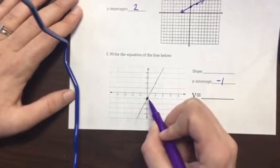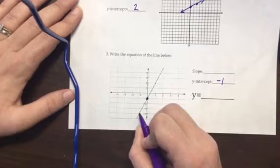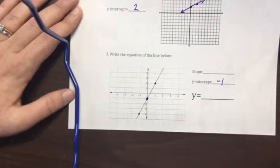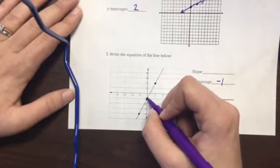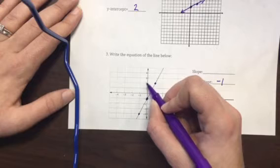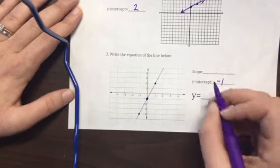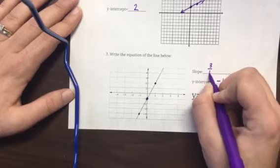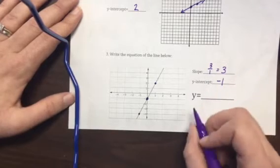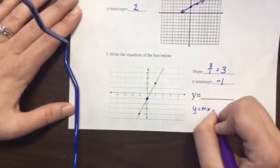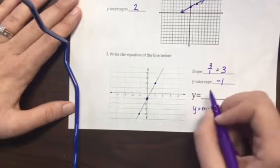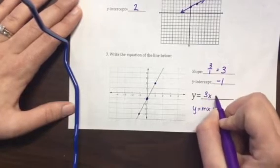Then I'm going to count my slope. So I'm going to pick a second point. I could choose the point down here, or I could choose this point up here. Either way, I'm going to count from my first point to another point along the line. So I'm going to go up 1, 2, 3, and over 1. So my slope is 3 over 1, which is the same as 3. So if I plug that into my equation, y equals mx plus b, m being my slope, b being my y-intercept, I'm going to have y equals 3x minus 1.